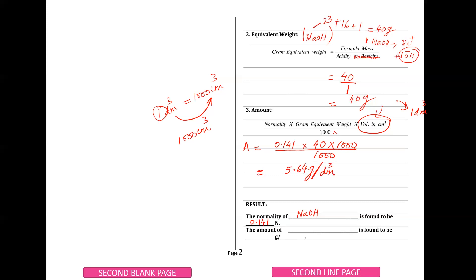If you have to write this result, you are getting the amount of sodium hydroxide. The amount is equal to 5.64 g/dm³. Write this number in your result section.